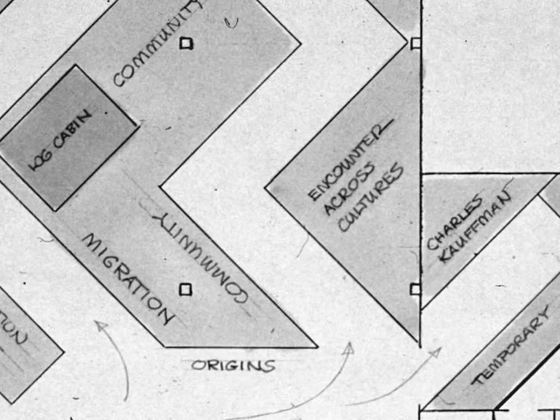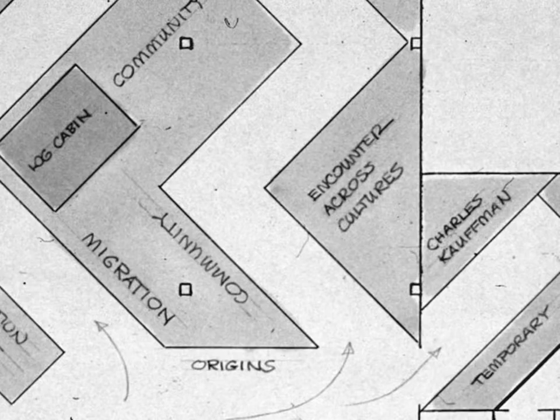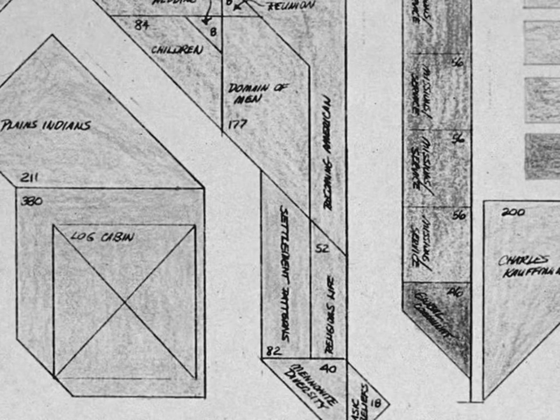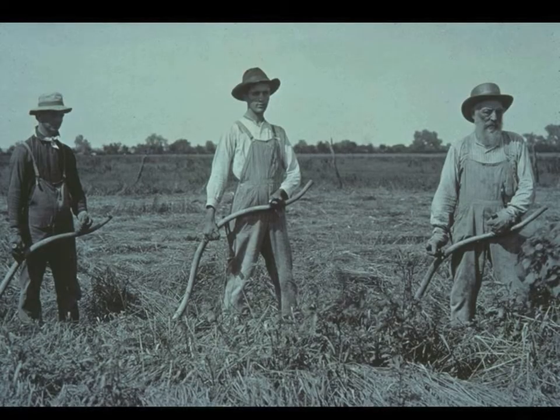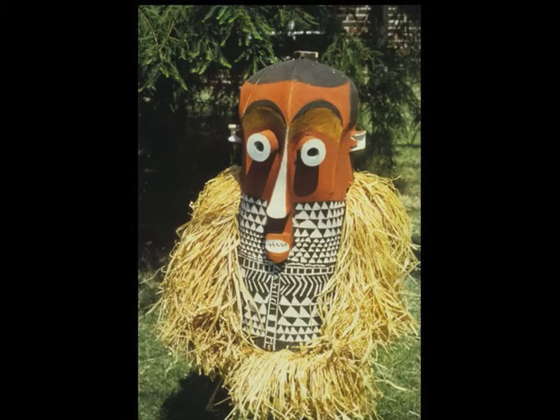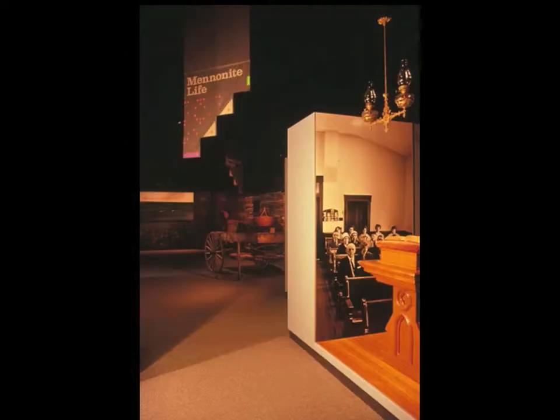Some themes required close proximities to each other; others could be visually and spatially separated. The principal themes were not to be given equal amounts of floor space. The number and size of the key objects and the relative importance of each theme determined how the 6,200 square feet of new exhibit space was to be allocated. Three major motifs emerged: land, people, and encounter across cultures. Under the canopy of these three motifs, seven themes were defined.